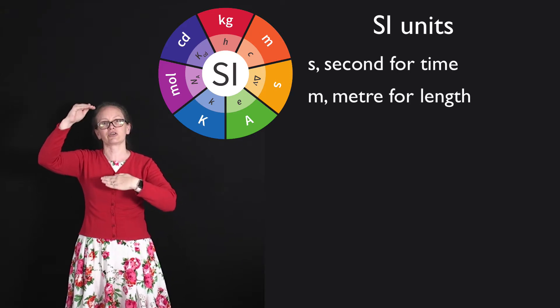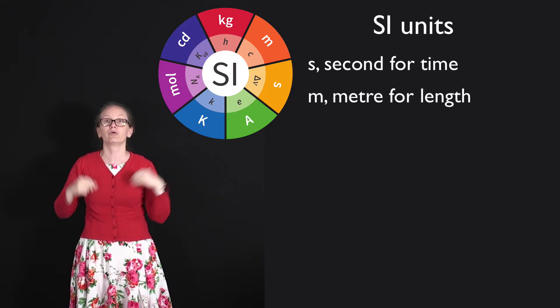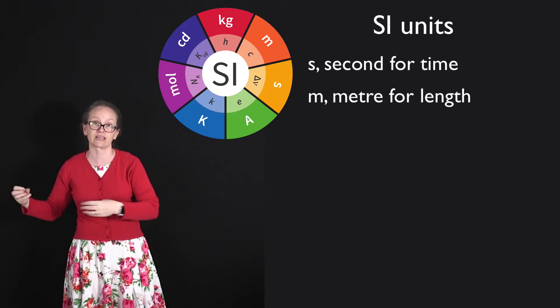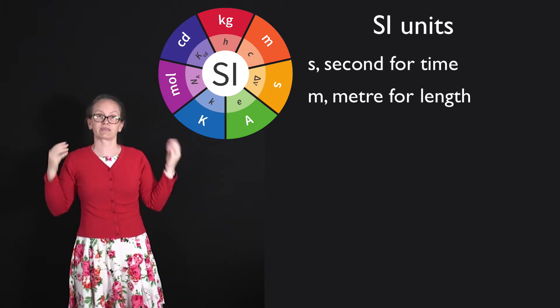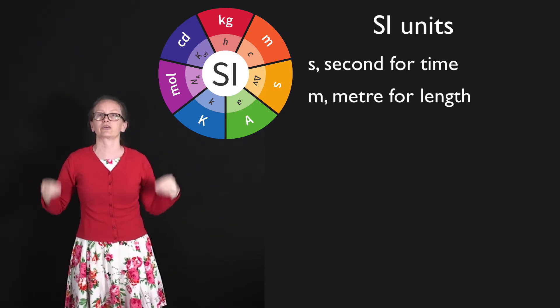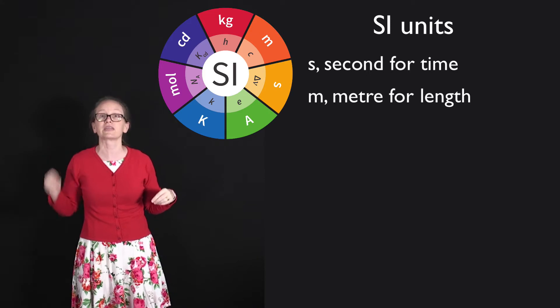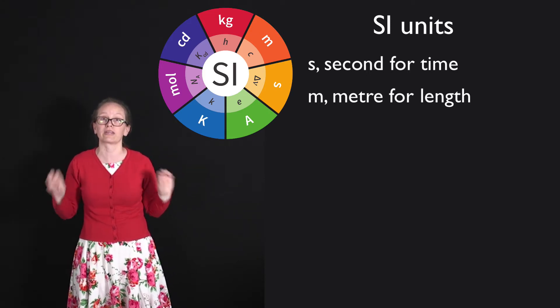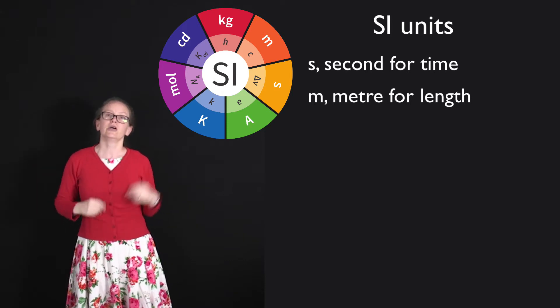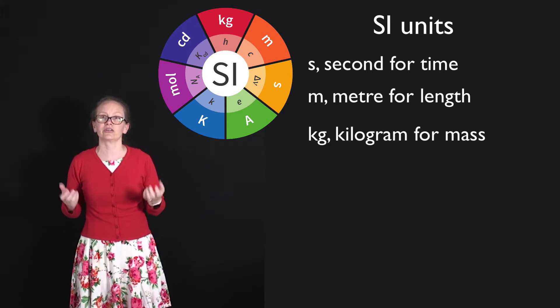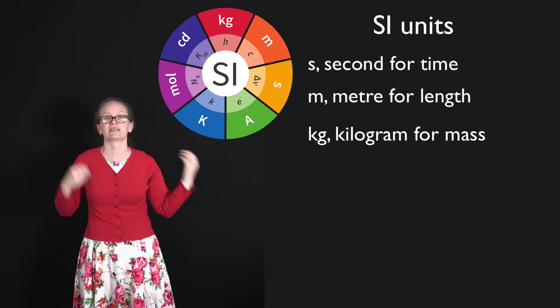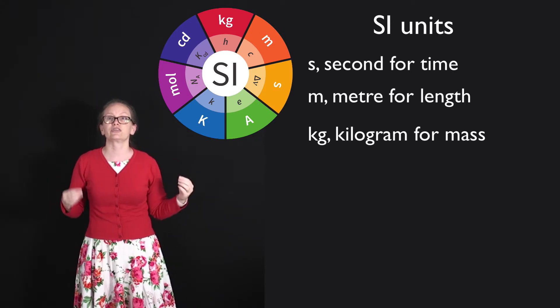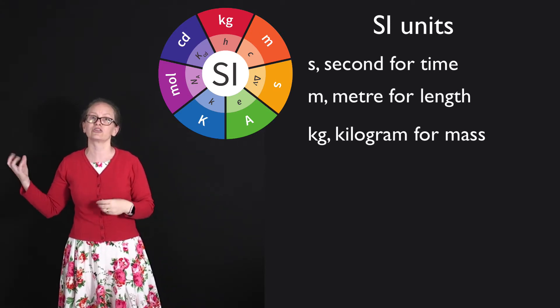These base units actually come from multiple of the fundamental constants, but a scientist anywhere could theoretically do all these experiments to find out exactly what these values are, so that we all know that we're talking about the same thing. Kilograms is the unit for mass, and in order to get that one, we need to measure Planck's constant, H.